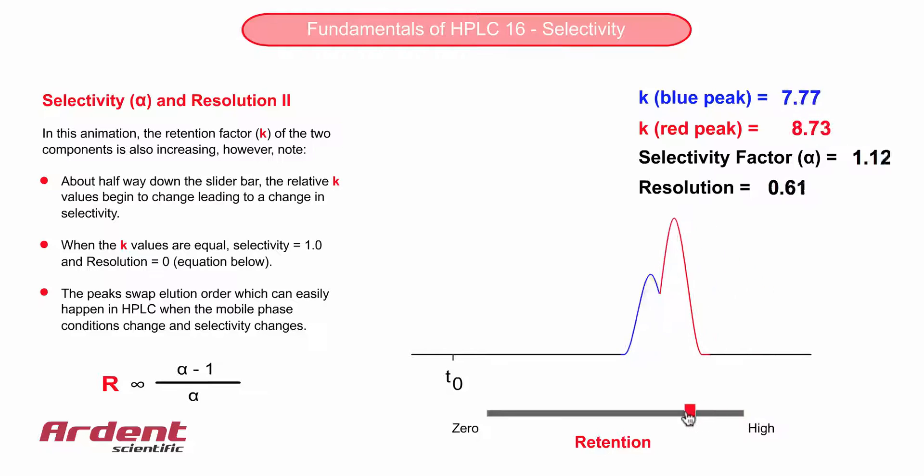As the peaks overlap or co-elute, the selectivity value alpha is 1. This makes sense, because if the retention factor values are the same, then there is no selectivity and resolution is zero.